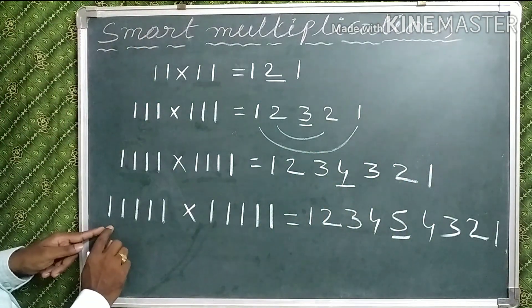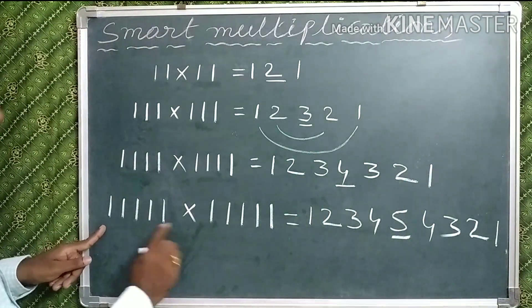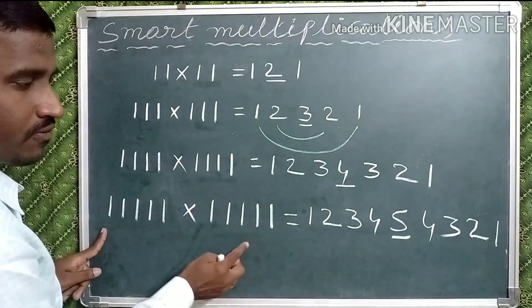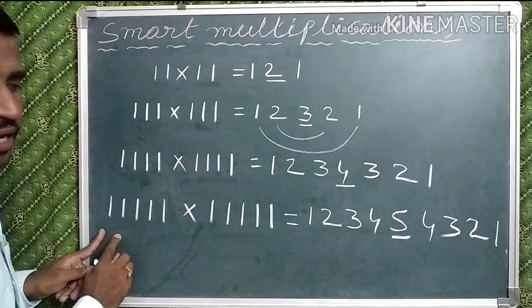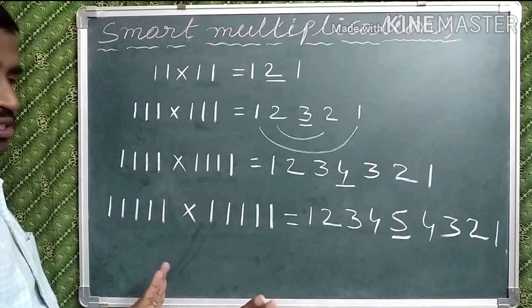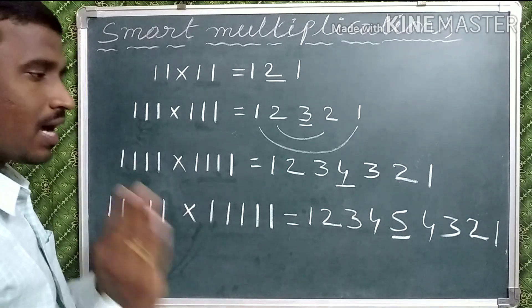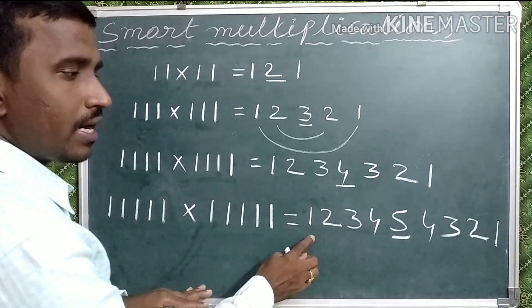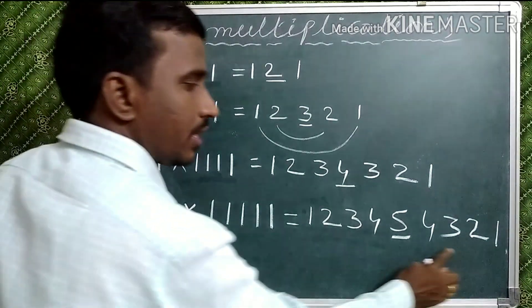For 5 ones times 5 ones: 5+5=10, so the answer is a 9-digit number: 1, 2, 3, 4, 5, 6, 7, 8, 9.